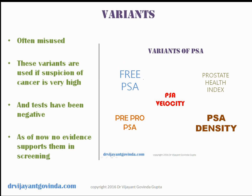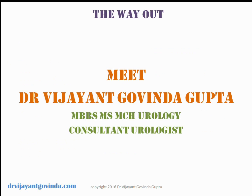The new buzzword is the variants of PSA, which are very often misused. Till today there is no convincing scientific evidence that any of these variants are more advantageous than regular PSA in detecting or treating prostate cancer. However, in conditions where the PSA report is false or does not meet the expectations of the urologist and patient, these variants can be used to detect cancer — especially if all tests have been negative but suspicion of cancer remains high. I again emphasize: there is no convincing evidence supporting PSA variants in screening.